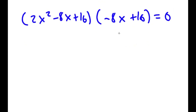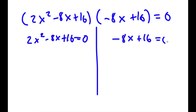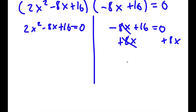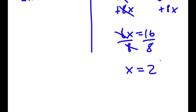We have 2x squared minus 8x plus 16 is equal to 0, and negative 8x plus 16 is equal to 0. For negative 8x plus 16 equals 0, I add 8x on both sides to get 8x equals 16, and dividing by 8 gives x is equal to 2.